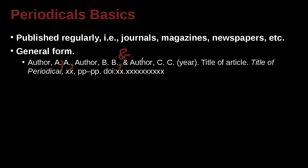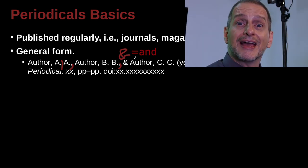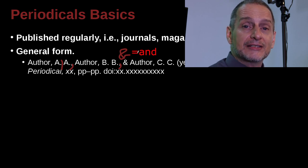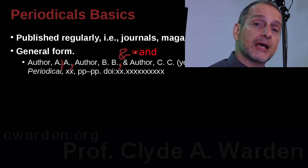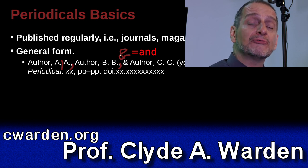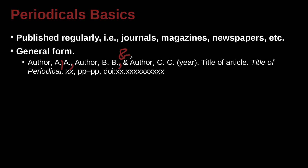Now remember, the ampersand simply means 'and' — A-N-D. It's a little bit complicated in the citation: sometimes you use ampersand, sometimes you use 'and,' but here in the reference list, you always stick to the ampersand. And then we're going to have the year of publication for that article that you're citing, and then another period.